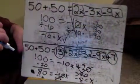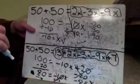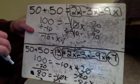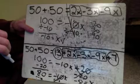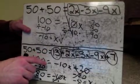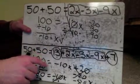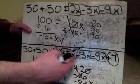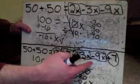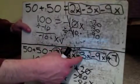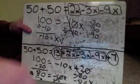And again, I can go through the whole verification process. I know that this side equals 100, so my other side would also have to equal 100. If I put negative 8 in for all the x's, this side would also equal 100.